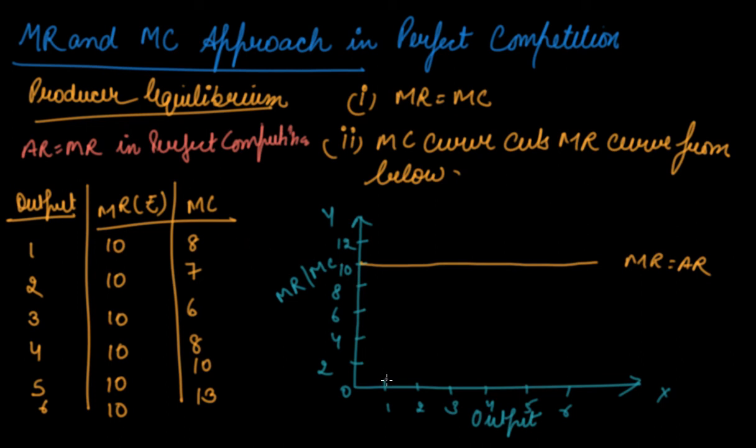Your output is one, your MC is eight. Your output is two, your MC is seven, somewhere there. When your output is three, your MC is six, somewhere there. When your output is four, your MC is eight, somewhere there.